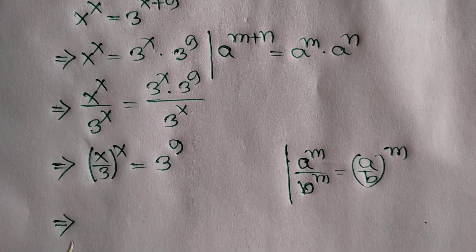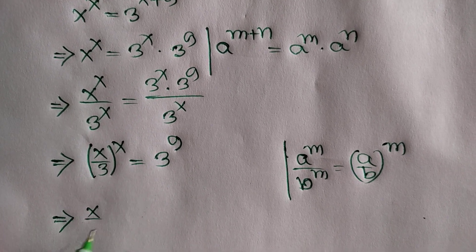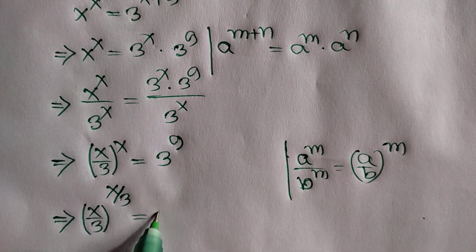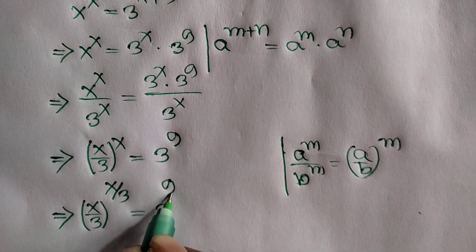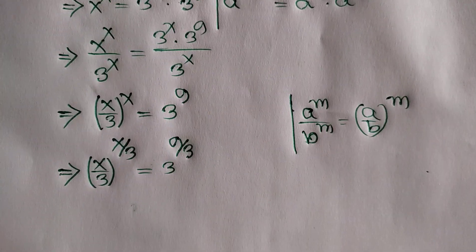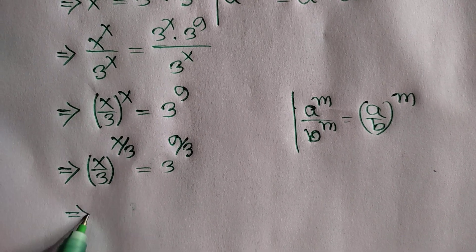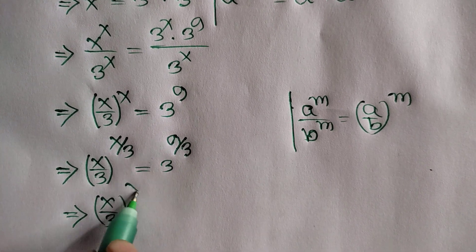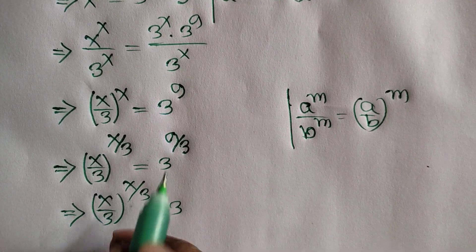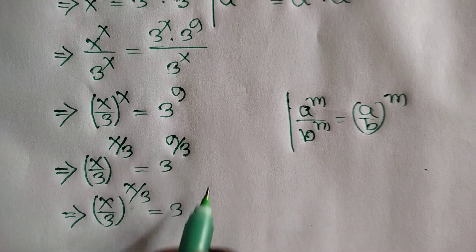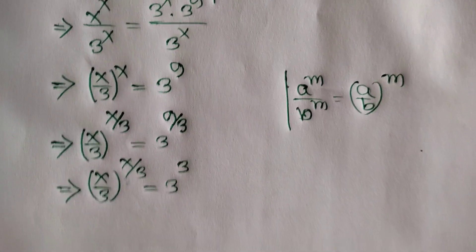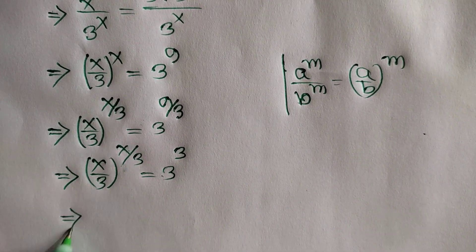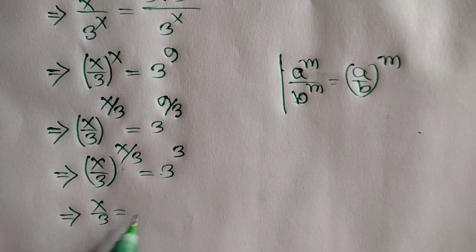Now we can write x over 3, whole to the power x over 3, is equal to 3 to the power 9 over 3. Or, x over 3, whole to the power x over 3, whole to the power x over 3 is equal to 3 to the power 3. Now, attention here — there are same base and same power, so we can write x over 3 is equal to 3.